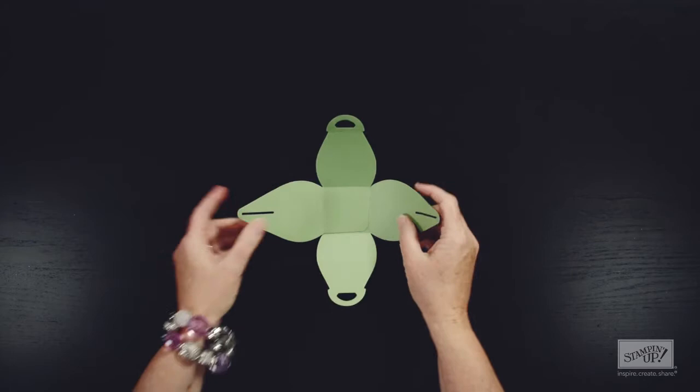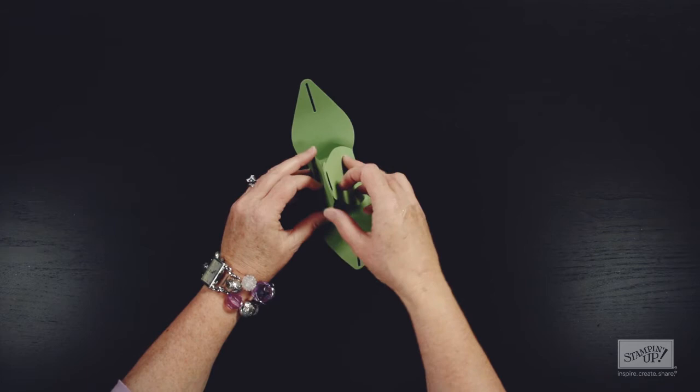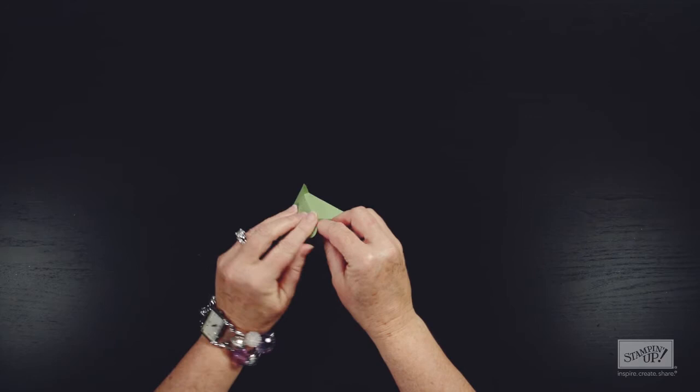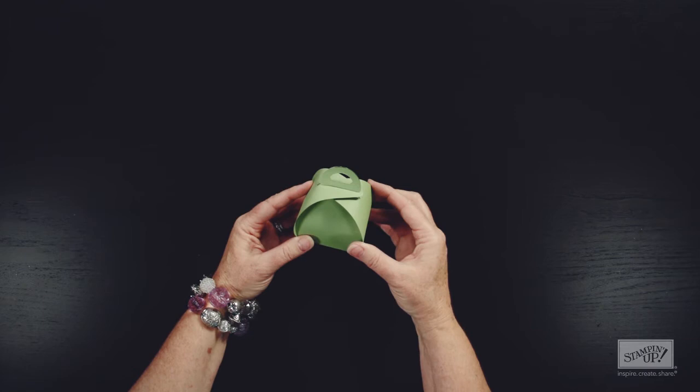So it doesn't have to be a lot, just a little bit. You'll start off by bringing these two pieces together in the center like this. These will fold over the top just like that, and then like that. And your box is completed just like that.